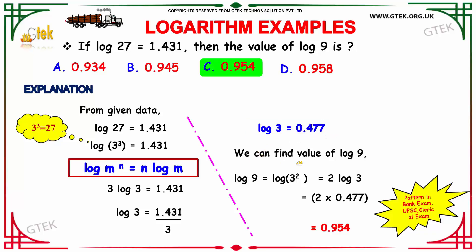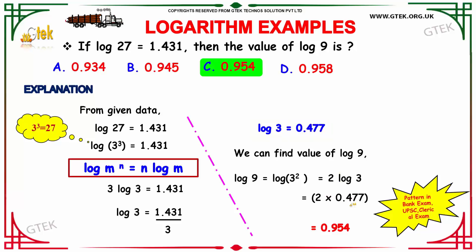To find the value of log 9, we write 9 as 3 squared. By using the property, we write it as 2 into log 3. The value of log 3 has already been found as 0.477. Substituting the value of log 3, we get the value of log 9 as 0.954. Please take note — this is a pattern for bank exam, UPSC, and clerical questions.